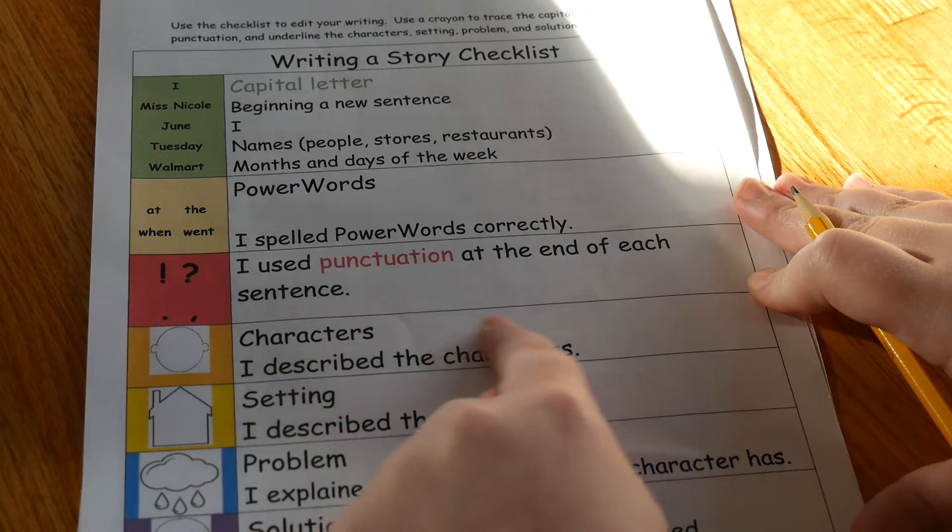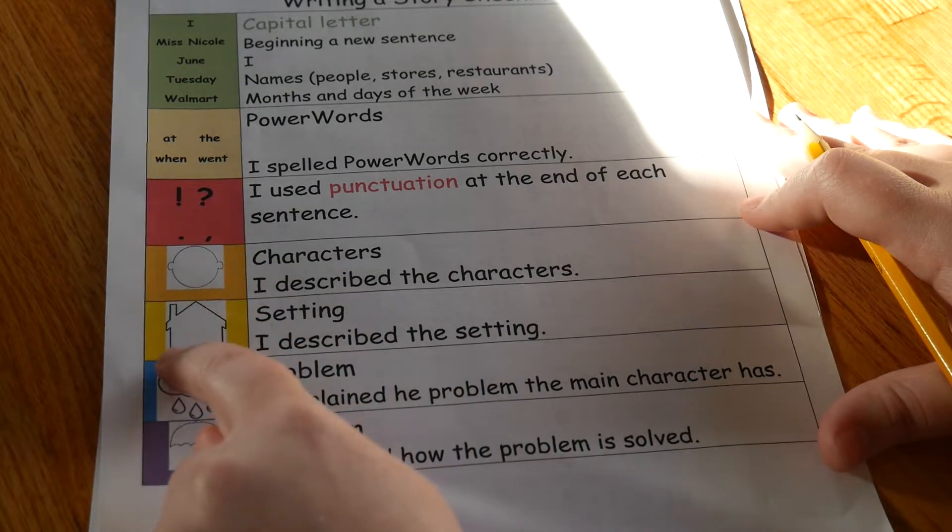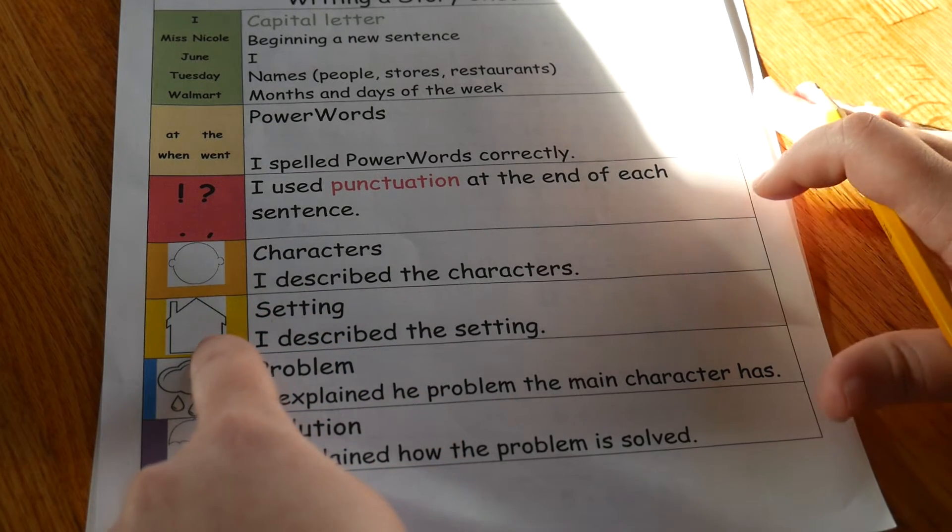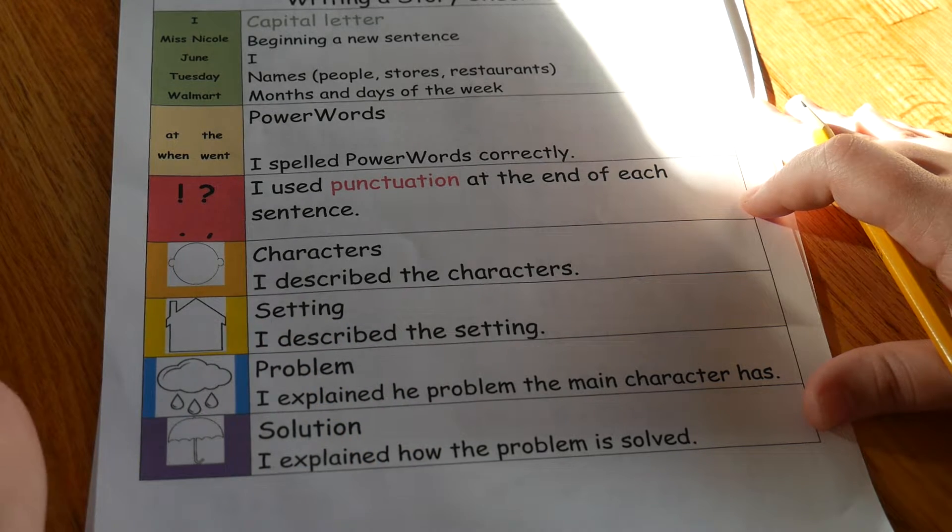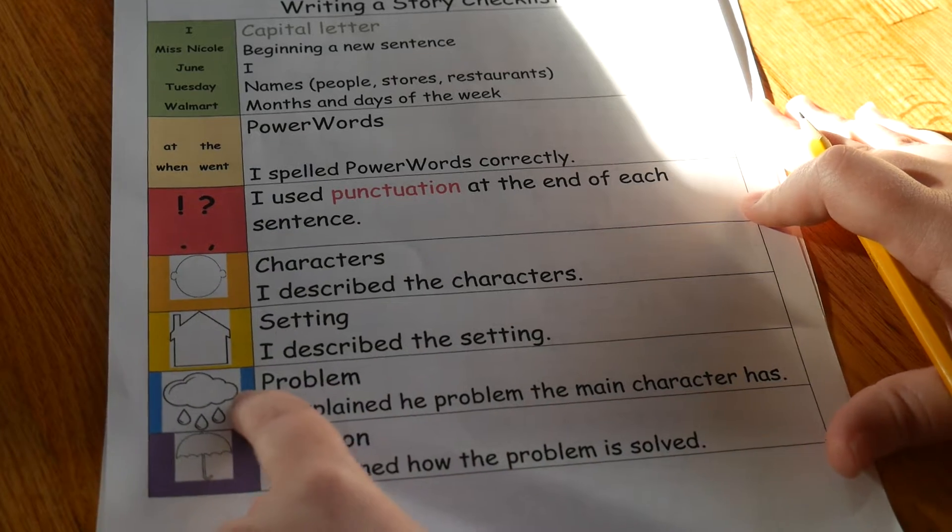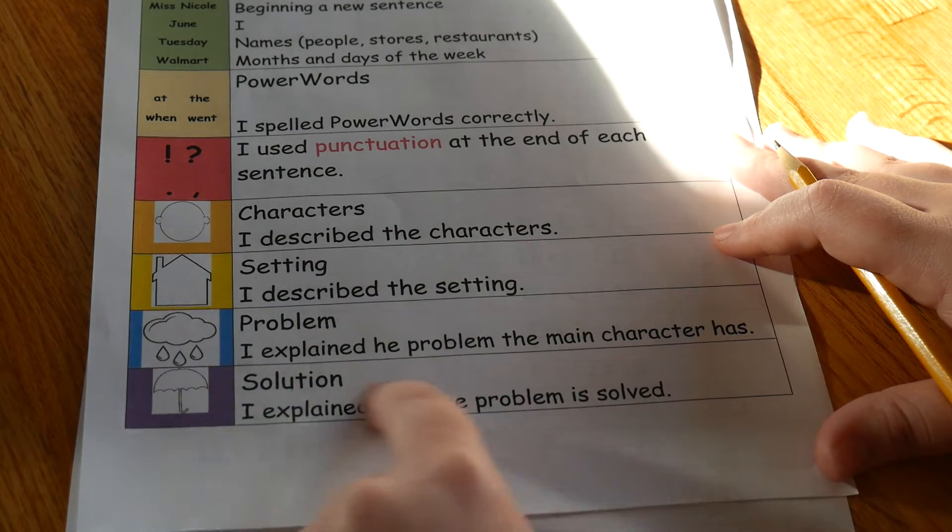Then you're going to underline your characters in orange, in yellow underline your setting, in blue underline the problem, and in purple underline the solution.